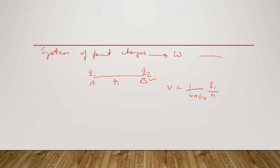This is equal to the work done in bringing a unit positive charge from infinity to the point B. Therefore the work done in bringing a charge q2 from infinity to the point B is given by W equals q2 times V, which equals 1 by 4 pi epsilon naught, q1 q2 by r.